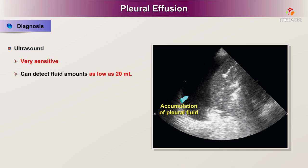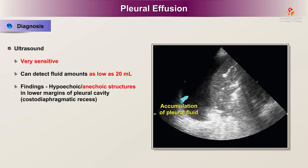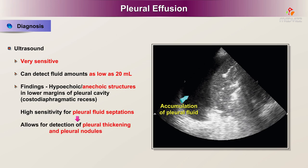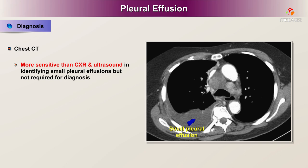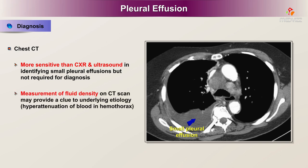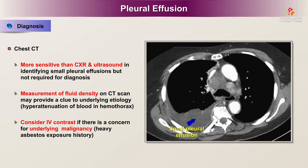Ultrasound is very sensitive and can detect fluid amounts as low as 20 ml. Findings include hyperechoic or anechoic structures in the lower margins of the pleural cavity at the costodiaphragmatic recess, with high sensitivity for pleural fluid septations, and allows detection of pleural thickening and nodules. It is commonly used for planning thoracentesis. Chest CT is more sensitive than chest X-ray and ultrasound for identifying small pleural effusions. Fluid density on CT may provide a clue to the underlying etiology, such as hyperattenuation of blood in hemothorax. Intravenous contrast should be considered if there is concern for underlying malignancy, for example with heavy asbestos exposure history.